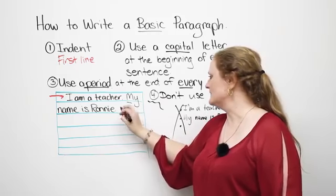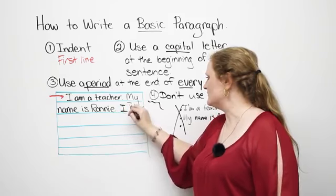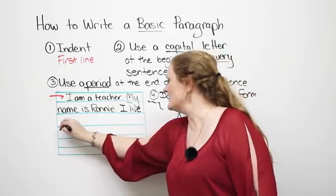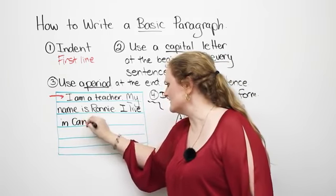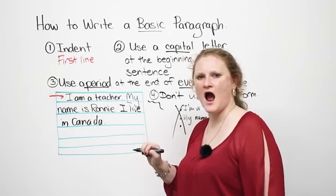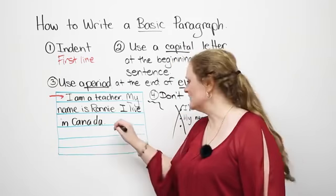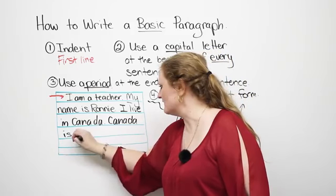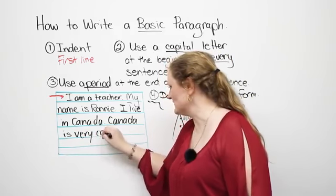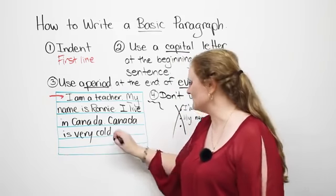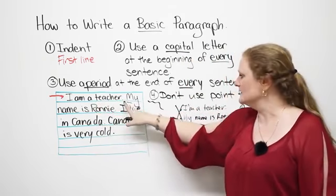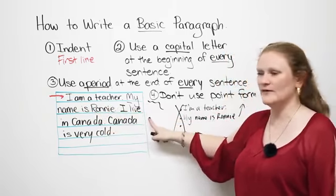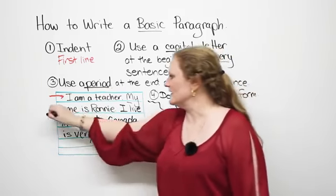So: 'I am a teacher. My name is Ronnie. I live...' I'm going to use up all of my line until the end. 'I live in Canada. What would you like to know about Canada? Canada is very cold in the winter.' As you can see by my example, I only stop my sentence at the end of my paper. I don't use each sentence on each line.